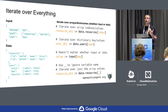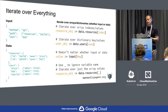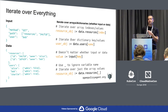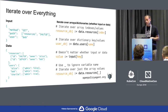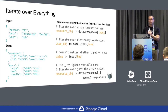One important thing: despite motivating iteration with arrays, you can use OPA to iterate over anything. At the top, there's an example iterating over both array indexes and values. You can also iterate over dictionary keys and values. It doesn't matter whether you're iterating over the input document or the data document. And if you don't want to bother inventing new variable names, you can use an underscore — and unlike other variable names, you can use multiple underscores within a single rule and they're all distinct.